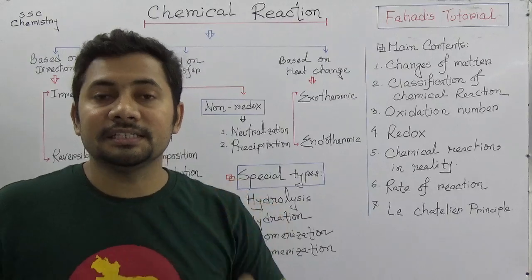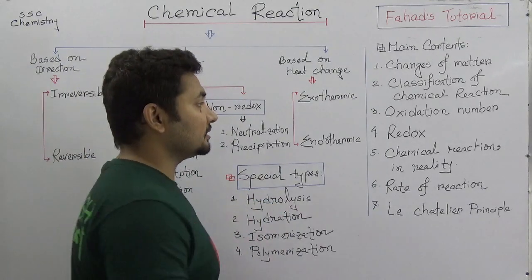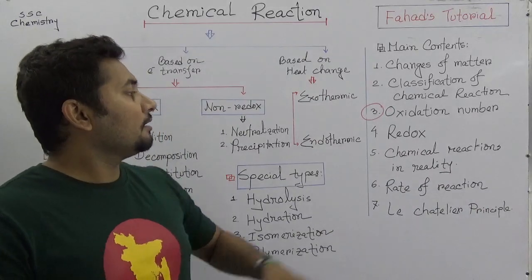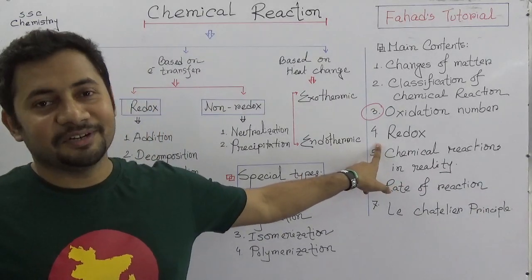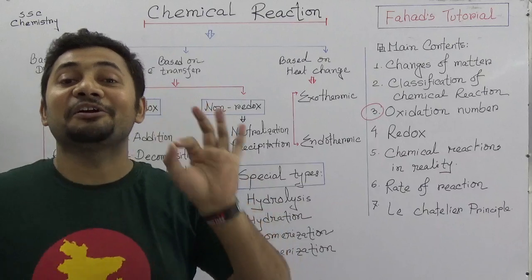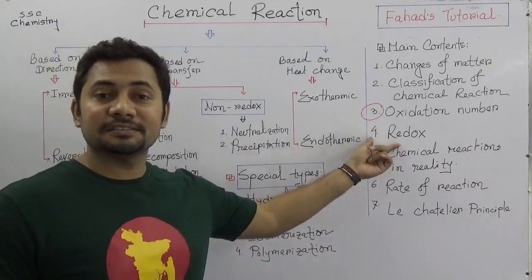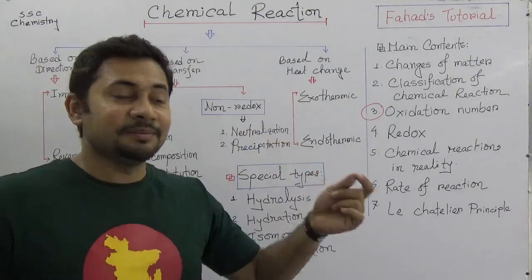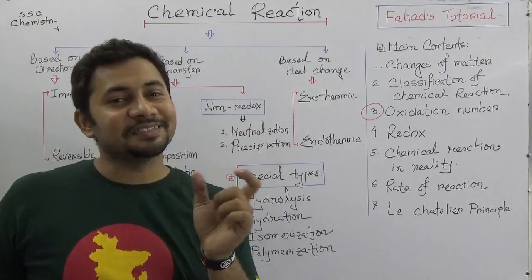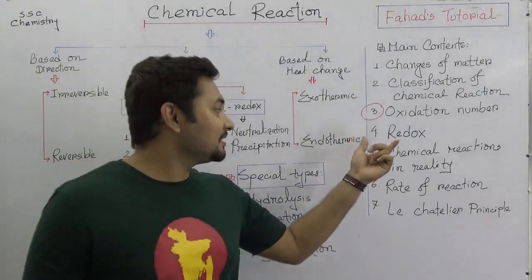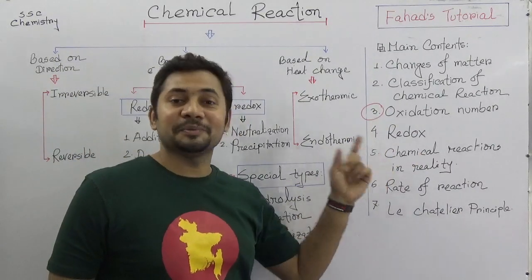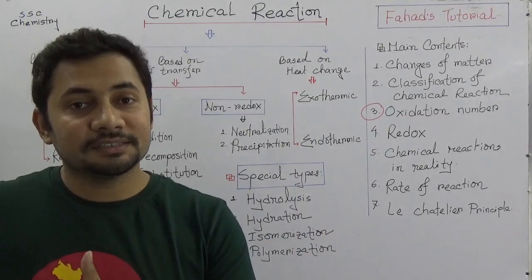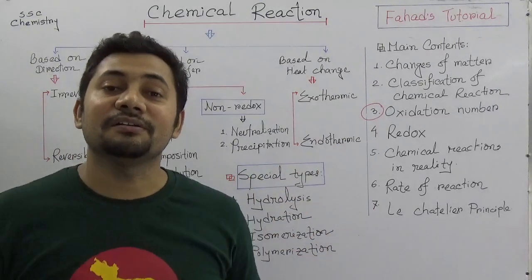A very important topic is oxidation number — we need to study it very well in a separate class. Most importantly, a very common question in exam papers is about redox: prove that redox is a simultaneous process. Redux means a type of reaction involving reduction and oxidation together, and together it is called redox.